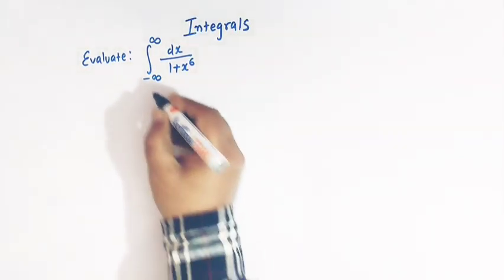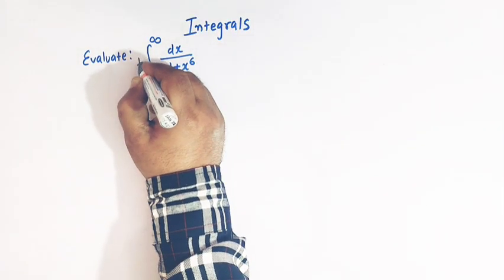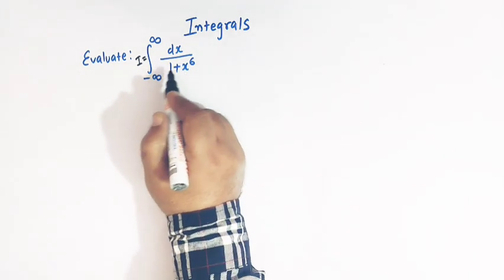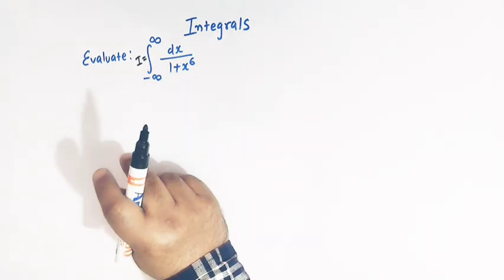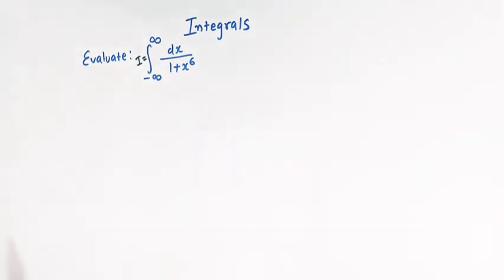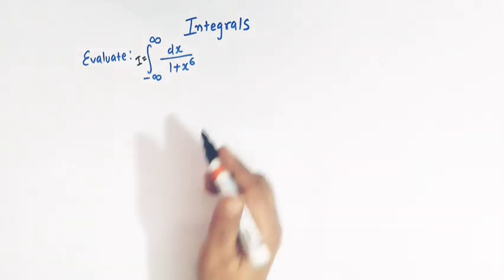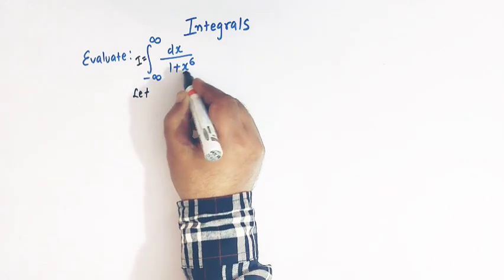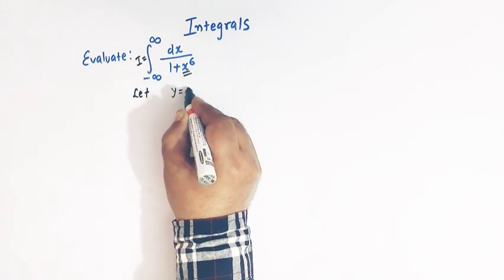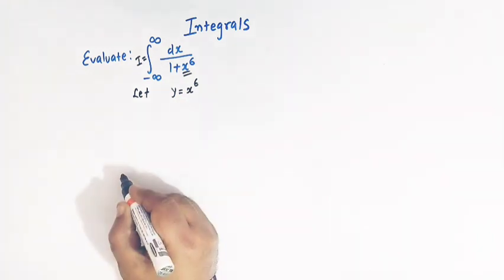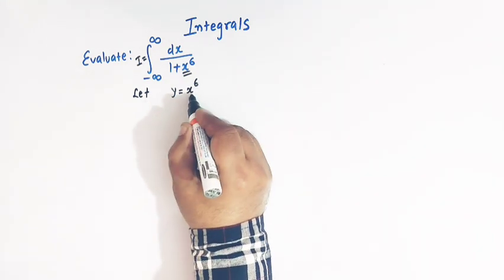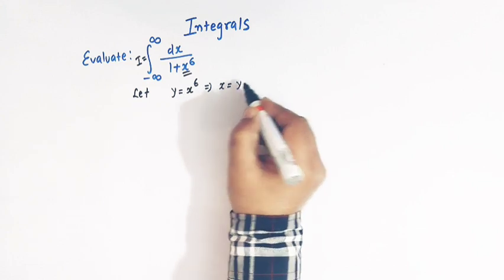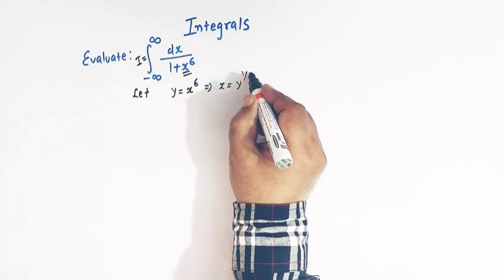So here let us first call this integral as I. Now to evaluate this integral I will make use of the method of substitution. So here I will take the substitution that is y is equal to x raised to 6. So when y is equal to x raised to 6, then x is equal to y raised to 1 over 6.